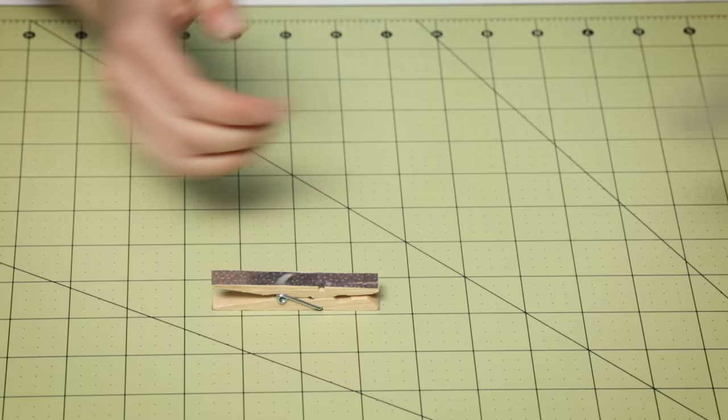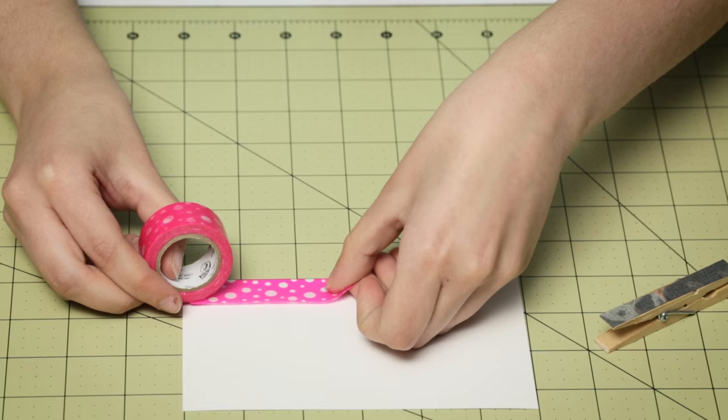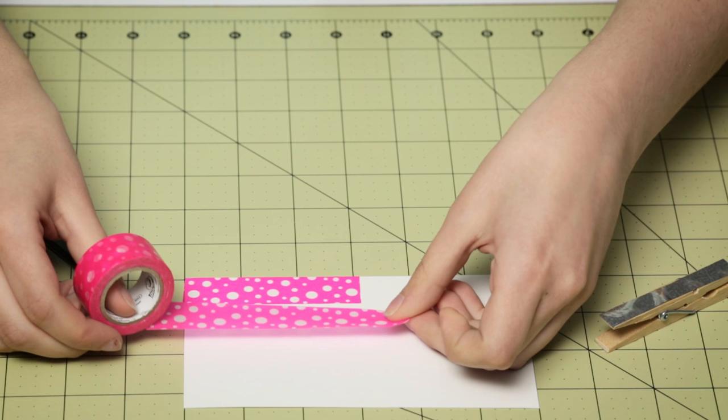Now I'm going to bring in my cardstock and my washi tape, and I'm going to start making the wings. I'm going to put a piece right here that is three inches long, and then I'm going to put a piece here that is four inches long.